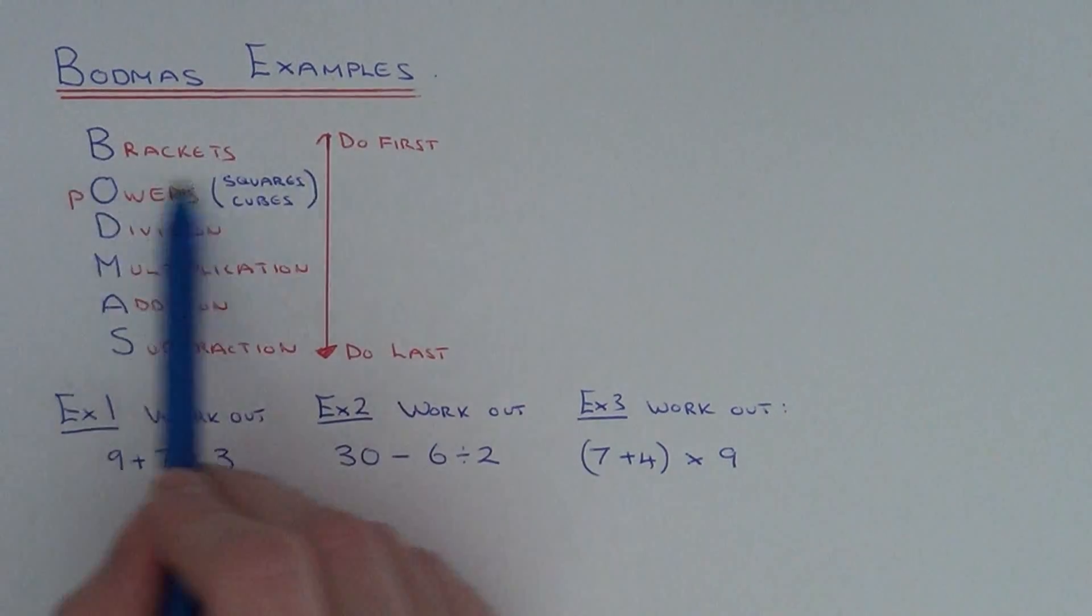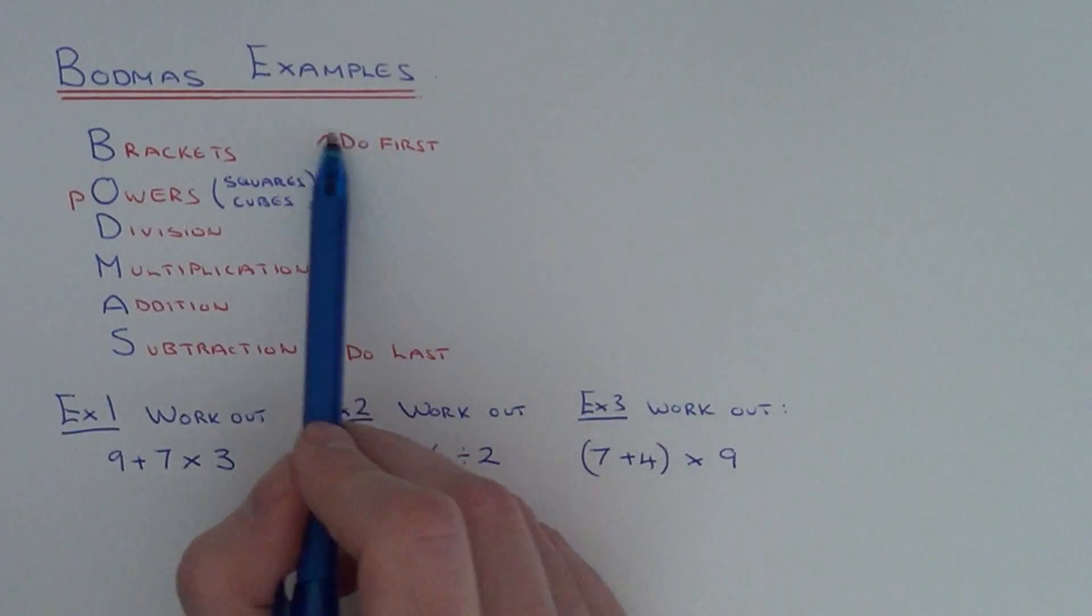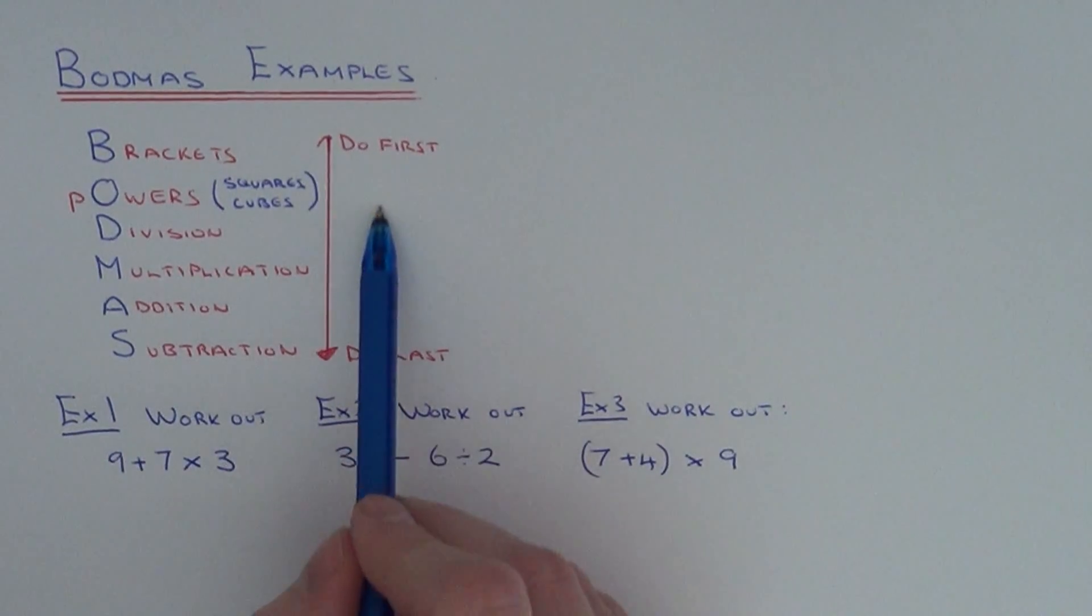The more important things are at the top of the word Broadmass, so you do these things first and you work your way downwards.